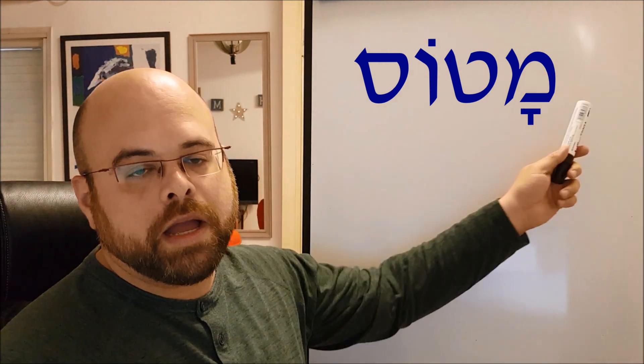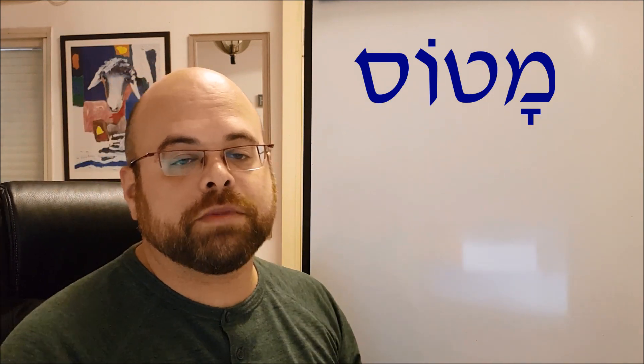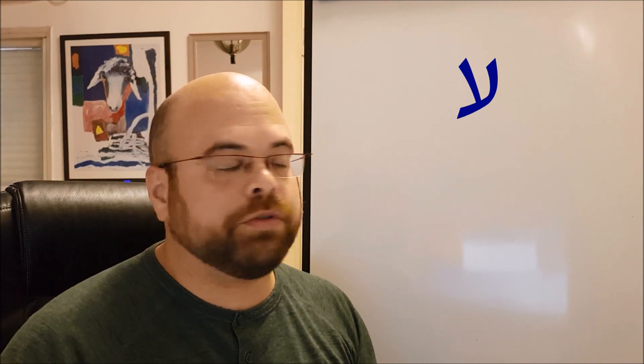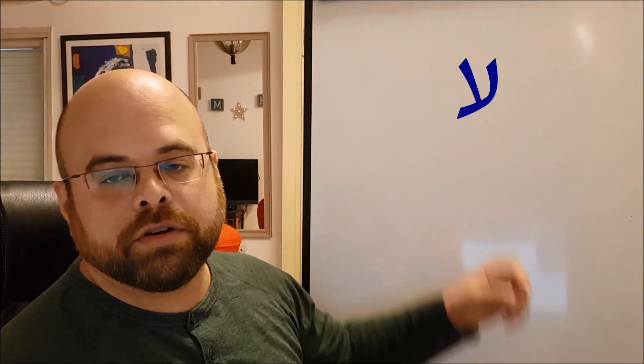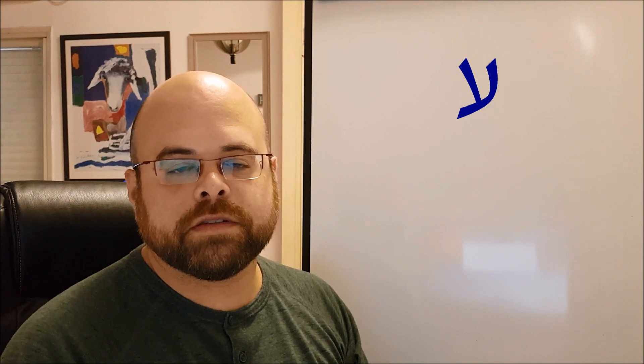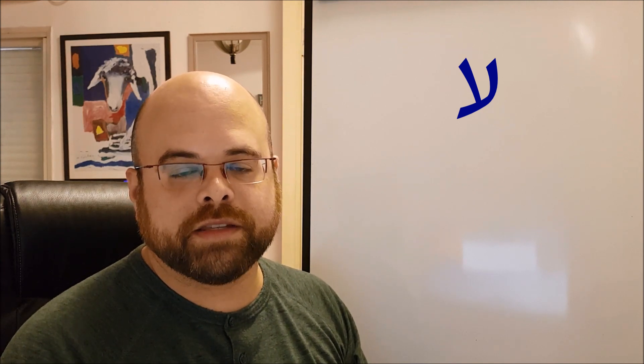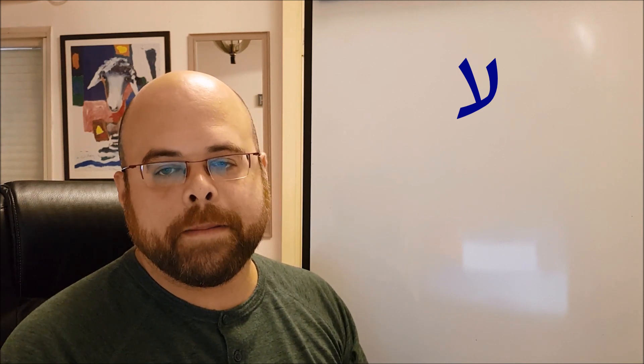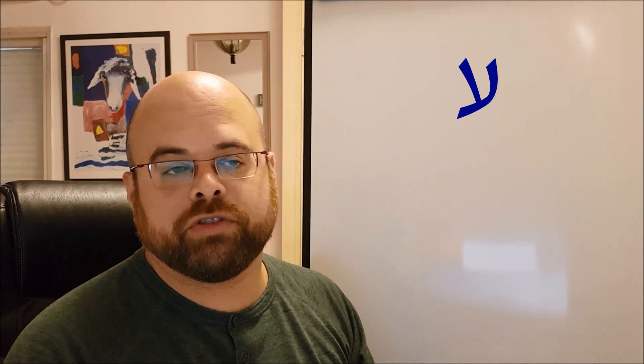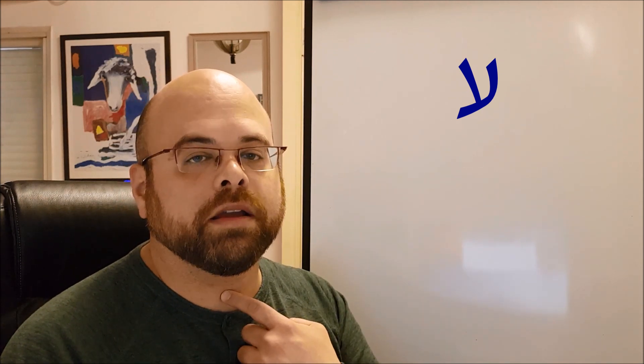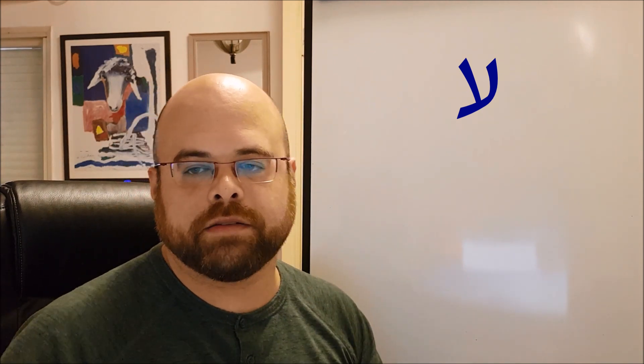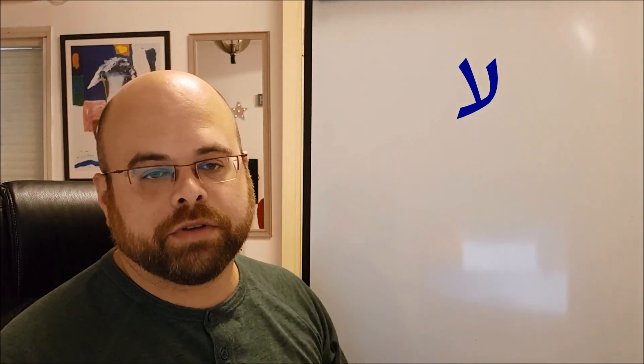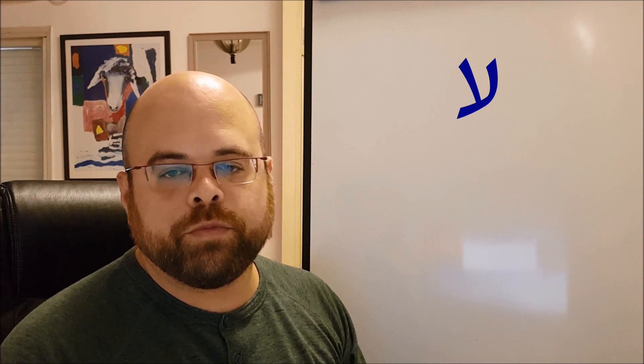letter S, the letter SAMECH S at the end without a vowel, so it's S. So together we read it MATOS. MATOS means airplane in Hebrew. So now the last letter for today is the letter AIN. AIN is pronounced just like ALIF. It just takes the vowel after it. The correct pronunciation, maybe the old pronunciation, is AH AH in the throat, but today we are too lazy to pronounce it like this, so we just pronounce it like ALIF, like AH. So in print we write it like